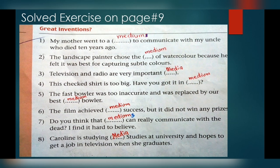Number 4: This checked shirt is too big — have you got it in medium? Here medium is used as a size. Number 5: The fast bowler was too inaccurate and was replaced by a better medium bowler — medium refers to a bowler between fast and slow. Number 6: The film achieved medium success but did not win any prizes — medium is used between very popular and unsuccessful. Number 7: Do you think that mediums can really communicate with the dead? I find it hard to believe. Number 8: Caroline is studying media studies at university and hopes to get a job in television when she graduates.